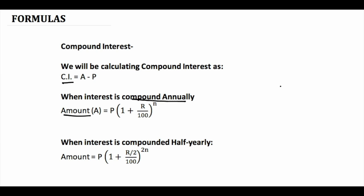What we calculated here is the amount. If you want to calculate compound interest, you reduce the principal from the amount. The next formula is for compounding half yearly — this becomes important in compound interest and many students tend to get confused here. The amount is P into (1 + r/200) raised to power 2n.